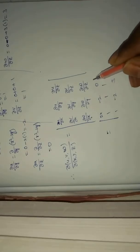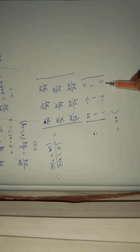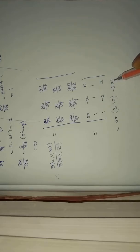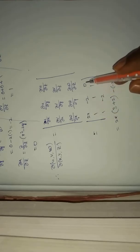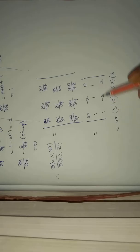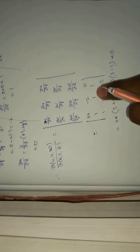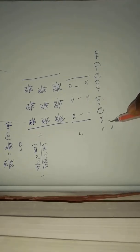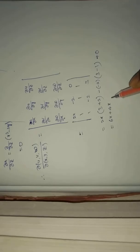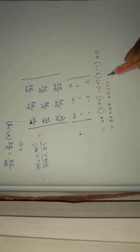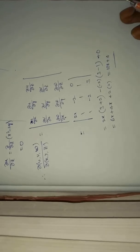Expanding the determinant: 2x times (1×3 minus 1×(-2)) minus (-2) times (1×3 minus 1×1) plus 0 times (something). This gives 2x times (3+2) plus 2 times (3-1), which equals 2x times 5 plus 2 times 2, giving 10x plus 4. The final answer is 10x + 4.